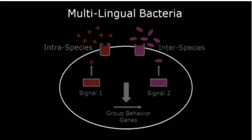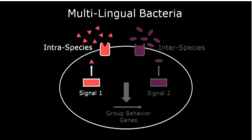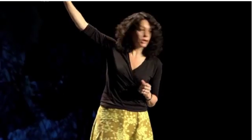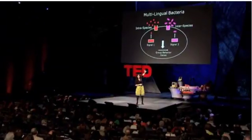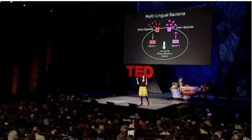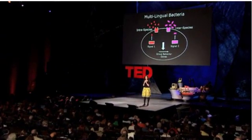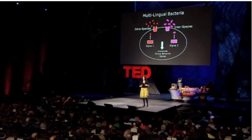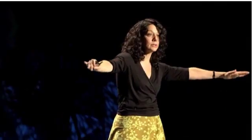That's exactly what we've done, taking two strategies. The first targets the intraspecies communication system: we made molecules that look like the real molecules but are a little bit different, so they lock into those receptors and jam recognition of the real thing. By targeting the red system, we're able to make species-specific or disease-specific anti-quorum-sensing molecules. We've also done the same with the pink system — we've taken that universal molecule and turned it around a little bit to make antagonists of the interspecies communication system, with the hope that these will be broad-spectrum antibiotics working against all bacteria.